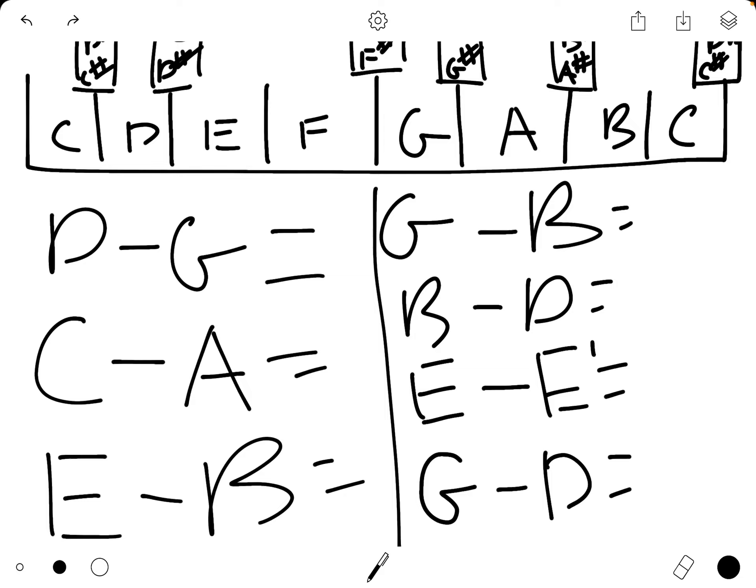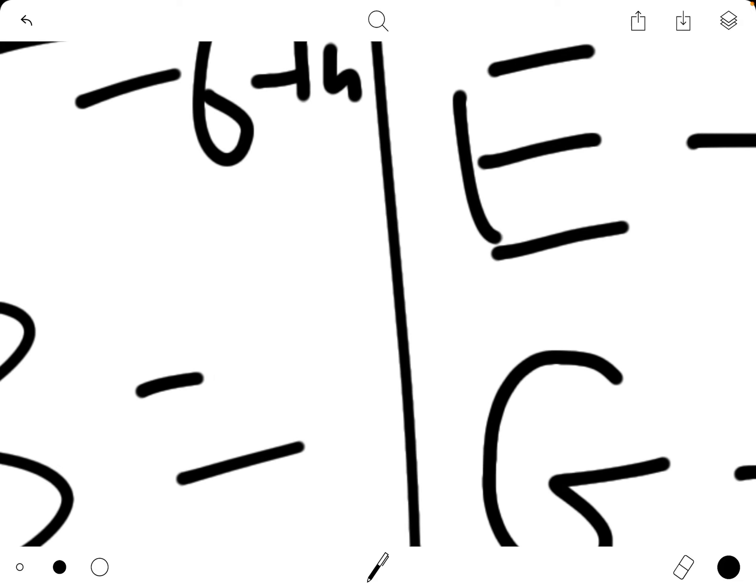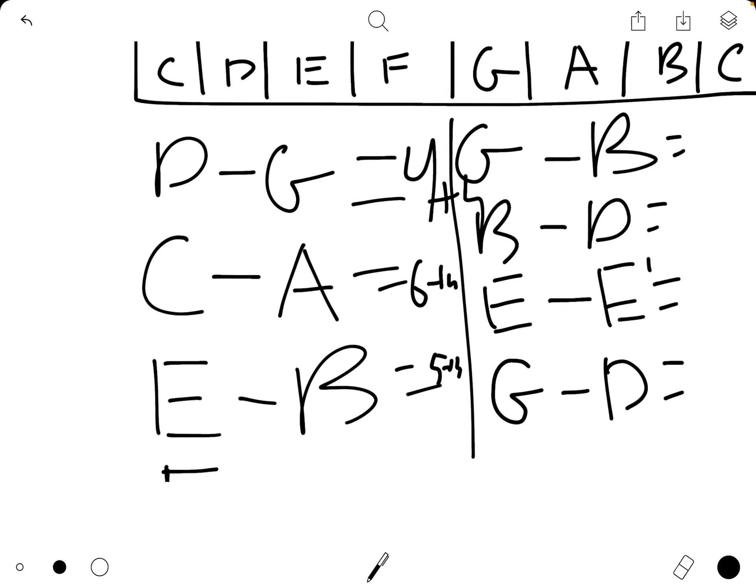By now you should be done filling in these answers because you paused the video, and let's go through these together. From D to G is a fourth because we have one, two, three, four. From C to A is a sixth because we have one, two, three, four, five, six. From E going up to B, we have one, two, three, four, five. That is a fifth.